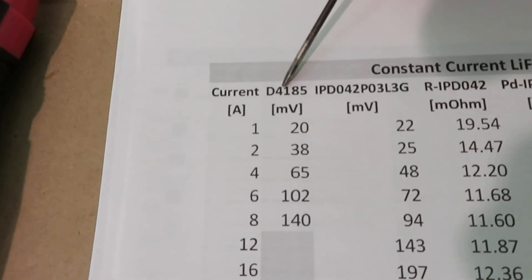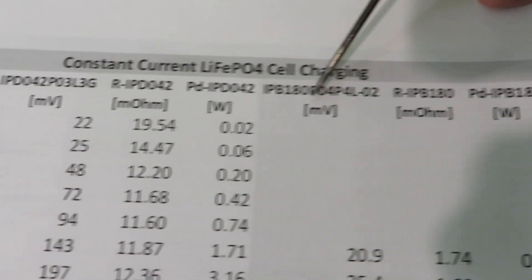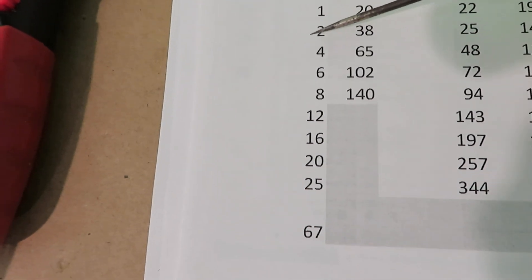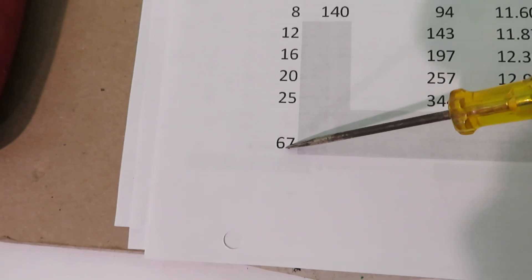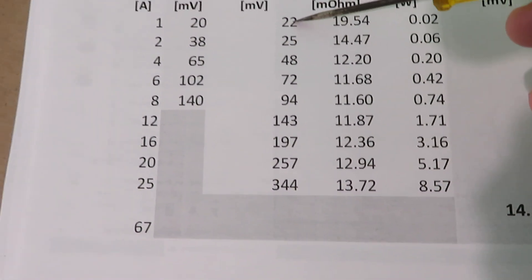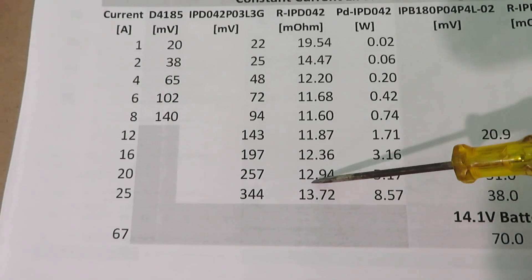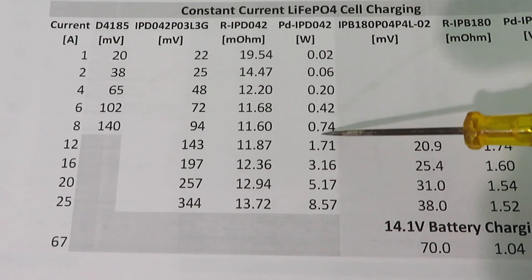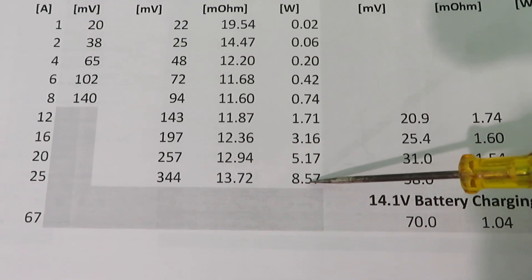Again, this is the 15 amp version, this is the 25 amp version, and this is the 67 amp version. This is the charging current, 1 to 25 for the cell, and then I did a battery charging at 67 amps which is ongoing right now. This is the millivolt voltage drop. From the millivolt voltage drop I can calculate the internal resistance of the MOSFETs, two of them in parallel. This is the power dissipation in order to keep the MOSFETs from overheating. The maximum is 8.6 watts, which is still manageable.